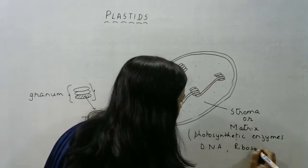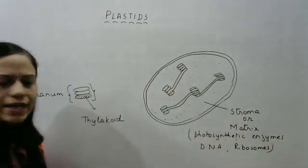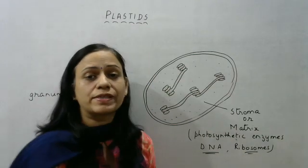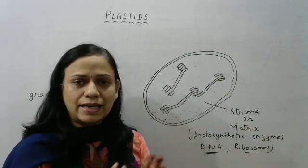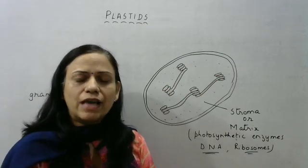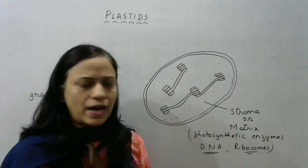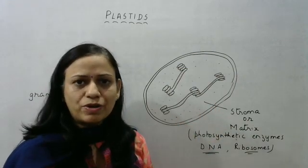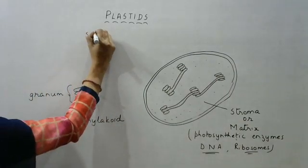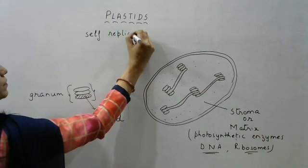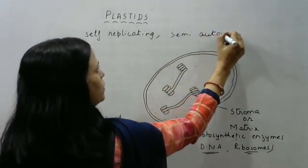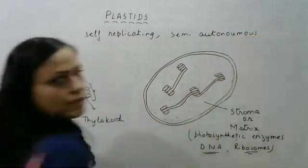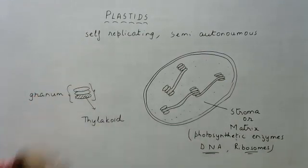Inside the stroma we also have DNA and ribosomes. Just like mitochondria had its own DNA, plastids also have their own DNA and their own ribosomes, meaning they are capable of making their own proteins. They are called self-replicating cell organelles — they can divide themselves within a cell without the involvement of the nucleus. The nucleus is not required for giving instructions to the chloroplast or mitochondria. They are also semi-autonomous, meaning they have their own control. These are two basic characteristics associated with plastids.